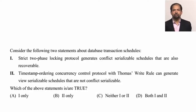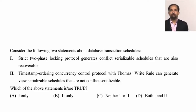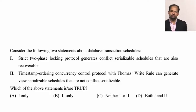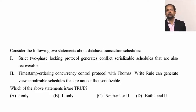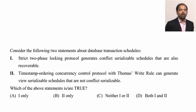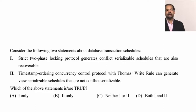Let us start this question of year 2019. It is of the transaction unit. There are two statements and we have to choose which is or are true. The first statement is: a strict two-phase locking protocol generates conflict serializable schedules that are also recoverable. The second statement is: timestamp ordering concurrency control protocol with Thomas Write Rule can generate view serializable schedules that are not conflict serializable.